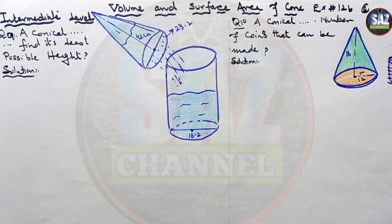Hello and welcome to Maths by Saas. This is my sixth lesson of D2, chapter number 12, Exercise 12b, which is about volume and surface area of a cone.